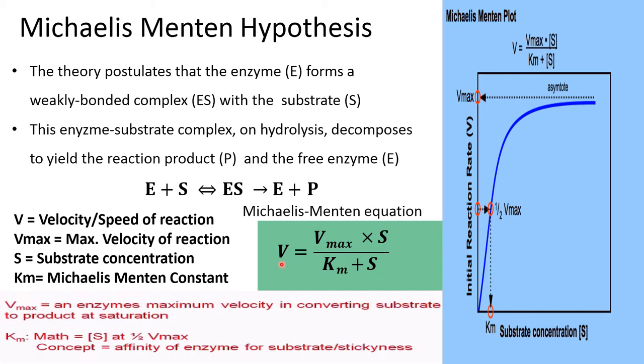According to this equation, V equals Vmax times S divided by KM plus S, where V is the velocity or speed of the reaction.